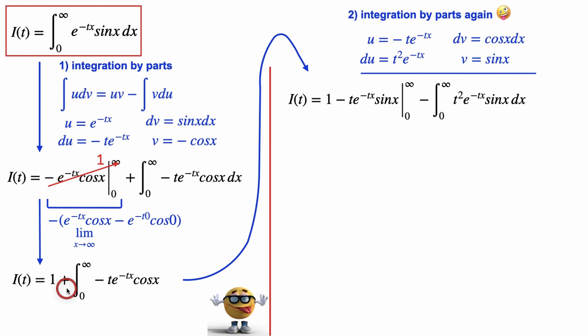Now we've got to do plus uv, and uv are these two multiplied together right here. Here's our negative sign, evaluated from 0 to infinity, minus the integral of v, which is sine of x, du. And du is this t squared e to the negative tx right here.